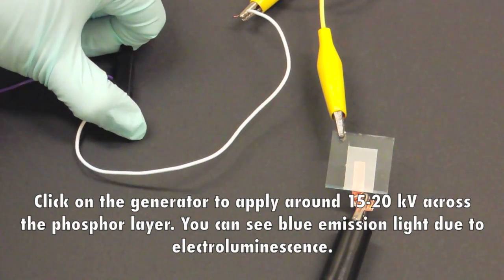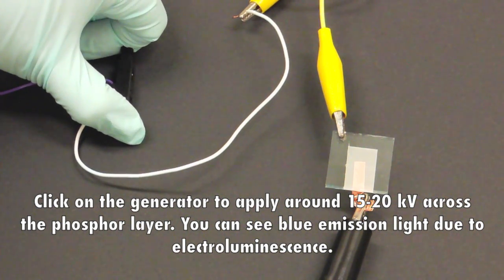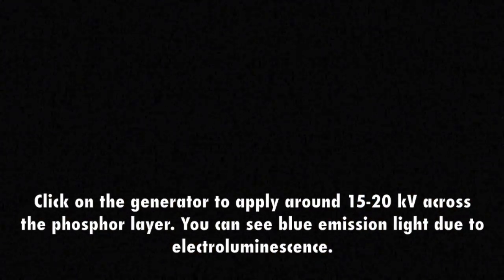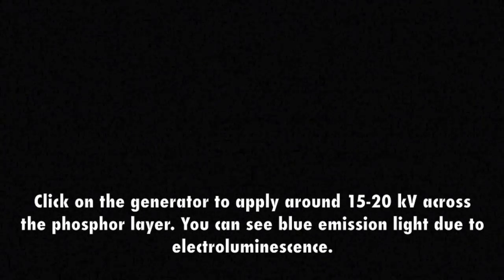Click on the generator to apply around 50 to 20 kilovolt across the phosphor layer. You can see blue emission line due to electroluminescence.